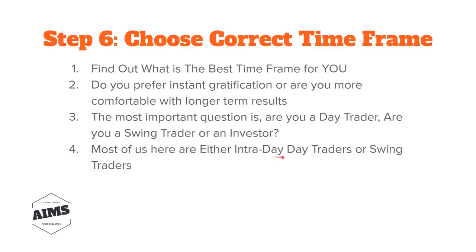Most in AIMS are either intraday day traders or swing traders. Intraday trading uses the 1-minute, 5-minute, and 15-minute charts. Swing trading uses the hourly, 4-hourly, and daily time frames — though hourly can also be used for day trading since you can enter and exit within the same session. If trades run overnight on the hourly chart, that becomes swing trading territory. Investors use daily, weekly, and monthly time frames.